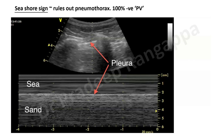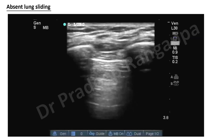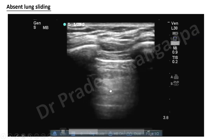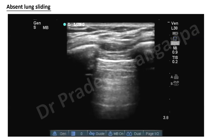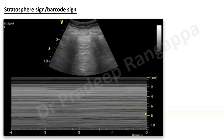Once you see lung sliding, you apply M-mode by placing a cursor and pressing M-mode, and you get something called the seashore sign. The sea represents the musculoskeletal thoracic wall, and the sand represents normal lung — that's why it's called the seashore sign. If the seashore sign is present, there is no pneumothorax and there are no air pockets in the lung, effectively ruling out pneumothorax.